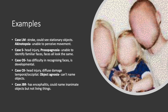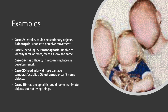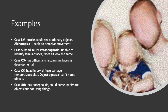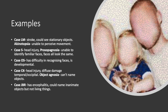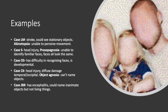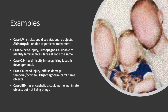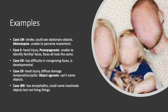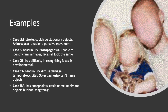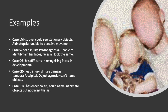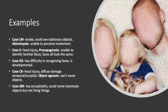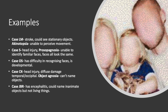Case LM had a stroke and could see stationary objects. From case LM, akinetopsia was discovered, which is the inability to perceive movement. Case S had a head injury and was discovered to have prosopagnosia, which is the inability to identify familiar faces — all faces look the same. Case S could not recognize faces.